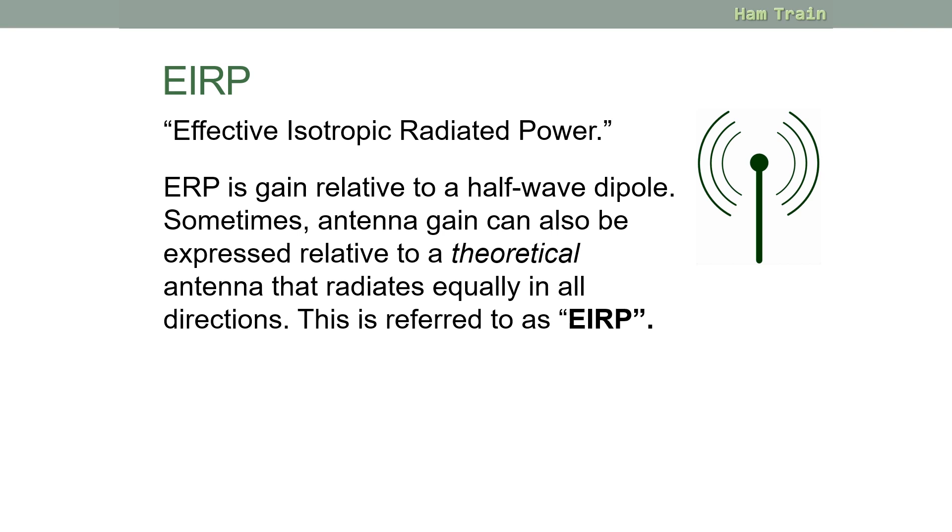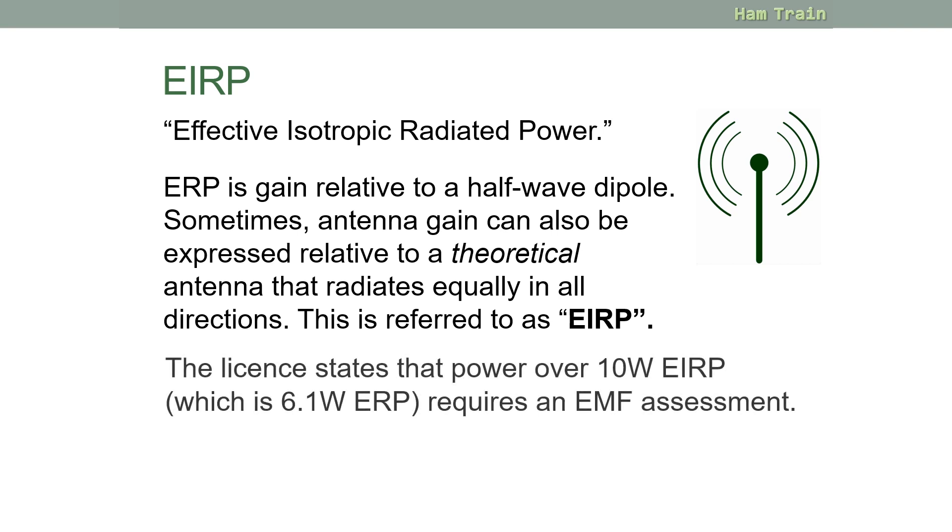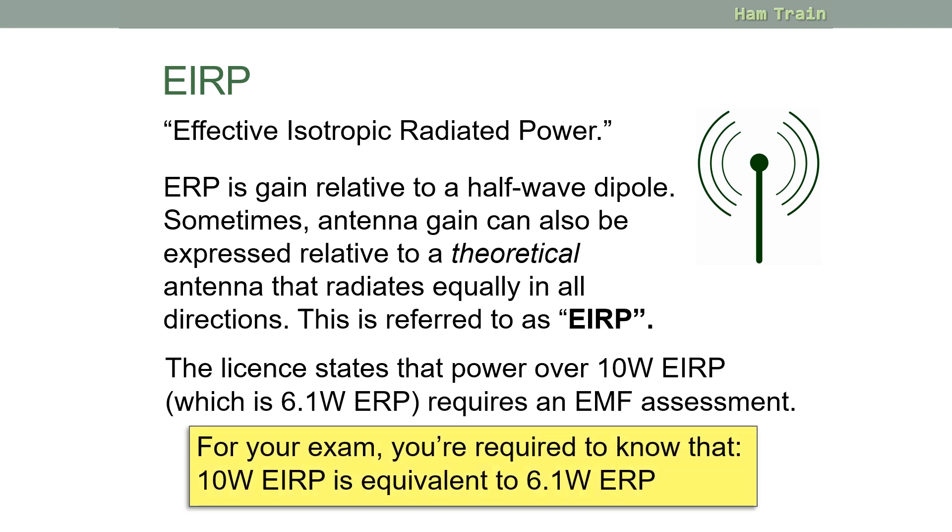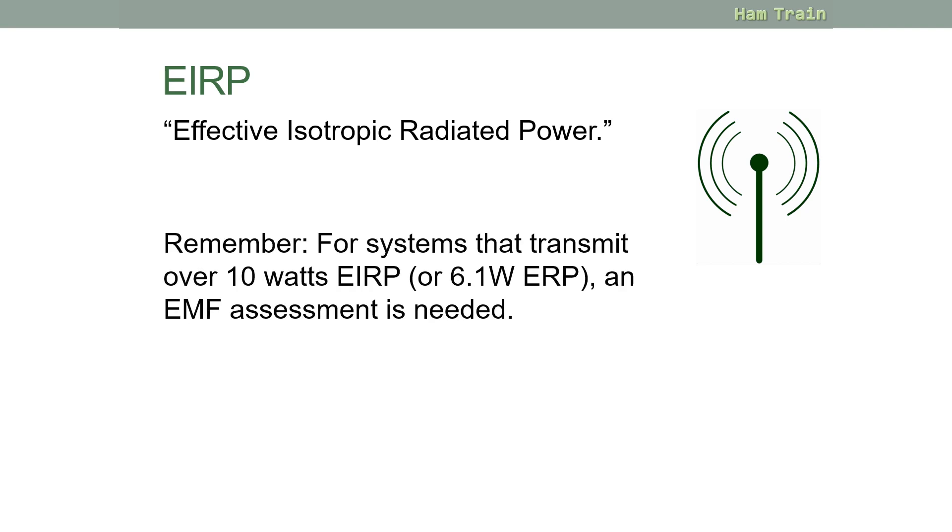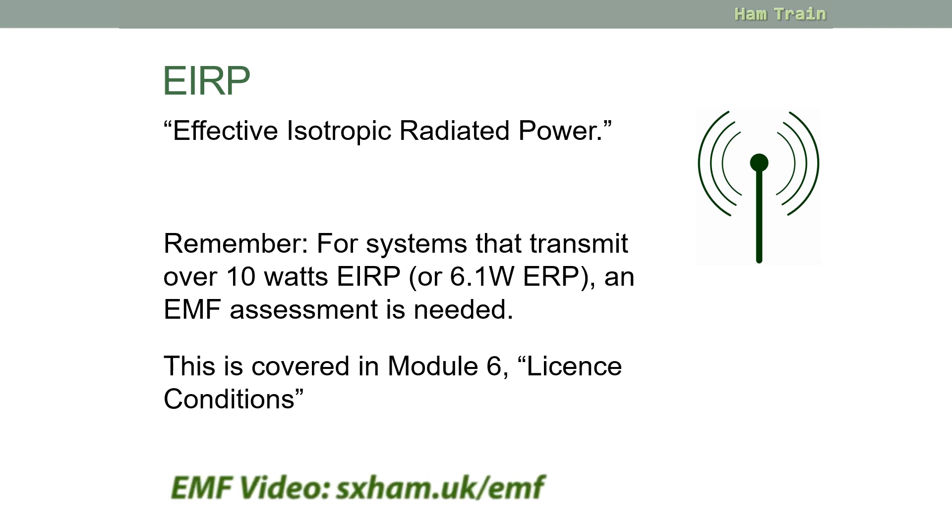So why does EIRP matter at foundation? It matters for one exam question. Now the amateur radio license explains that powers over 10 watts EIRP require a special assessment. This is all about exposing members of the public to electromagnetic fields. The license states that if you're transmitting over 10 watts EIRP, then you are required to do an assessment. 10 watts EIRP is equivalent to 6.1 watts ERP. Annoyingly, this is a value that you may be asked at your exam. So for your exam, you're required to know that 10 watts EIRP is equivalent to 6.1 watts ERP. So in summary, EIRP is gain that's relative to a theoretical antenna, whereas ERP is gain relative to a half-wave dipole. You'll find more information on the EMF assessment and that 10 watts EIRP limit in Module 6 license conditions.